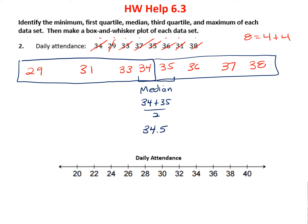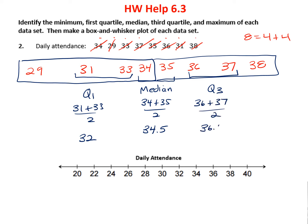Now when I look on the left side there are four numbers, so once again there are two numbers in the middle. My quartile 1 is going to be 31 plus 33 divided by 2, and that's 32. Likewise on the other side, I'm going to have 36 and 37 as my two middle numbers. So quartile 3 is going to be 36 plus 37 divided by 2, which is 36.5. And then our minimum is our smallest number and our maximum is our largest number.